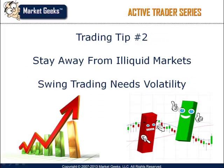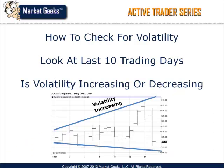The second tip I highly recommend you follow is to stay away from markets that are stagnant or lack sufficient volatility for swing trading. The best way to test this is to look at the daily range from high to low and compare it to the last 10 trading days. If the range is on the high end of the 10-day range, the stock or market you are looking to trade most likely has sufficient volatility. If volatility is on the low end, you may want to reconsider trading that market at that time.